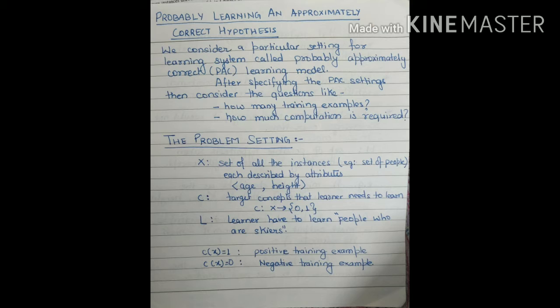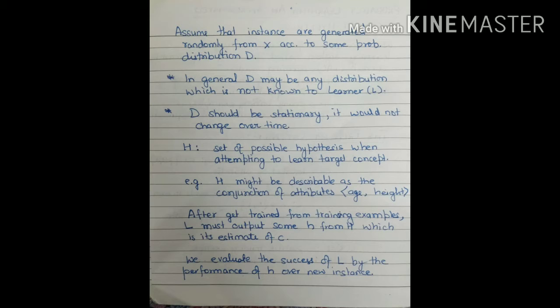When the value of C(x) equals 1, all those instances are positive training examples, and for those training examples where the value of C(x) is 0, they are all negative training examples. While providing these PAC settings, we have to assume that instances are generated randomly from X according to some probability distribution. We have to decide the probability distribution D for the instances, and that probability distribution should be the same for the whole process — D may be any distribution, not known to the learner, and it should be stationary, not changing over time.